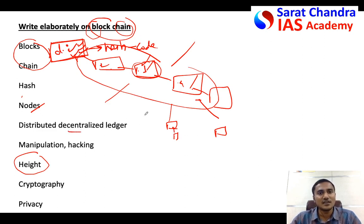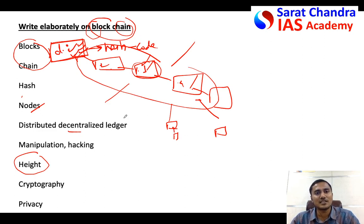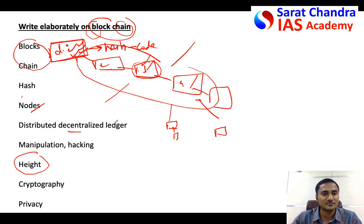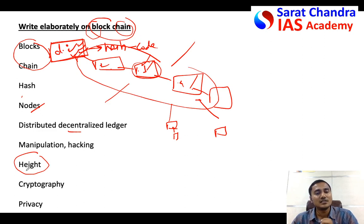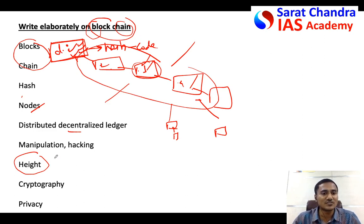It is a kind of ledger — a distributed ledger with all transactions clearly mentioned as per their height. Manipulation and hacking are difficult because if data were centralized in a single place, a hacker could hack that system and manipulate it. But since copies are distributed across several computers, the hacker would have to manipulate several copies simultaneously, which is impossible. That is why hacking is difficult.